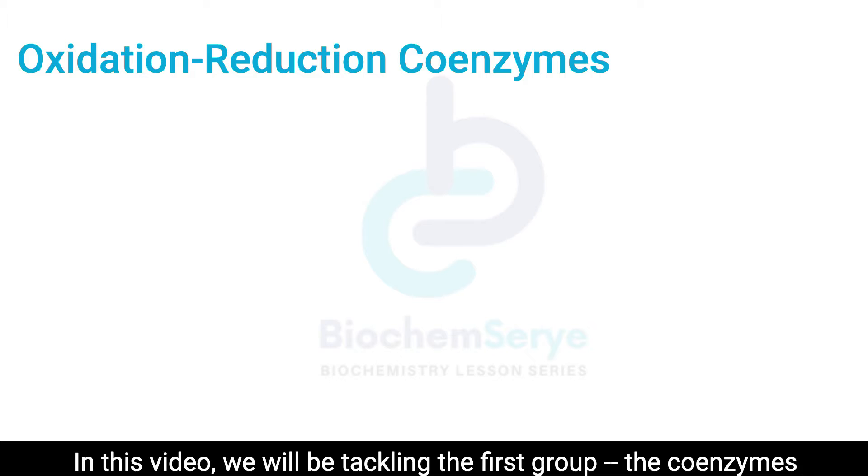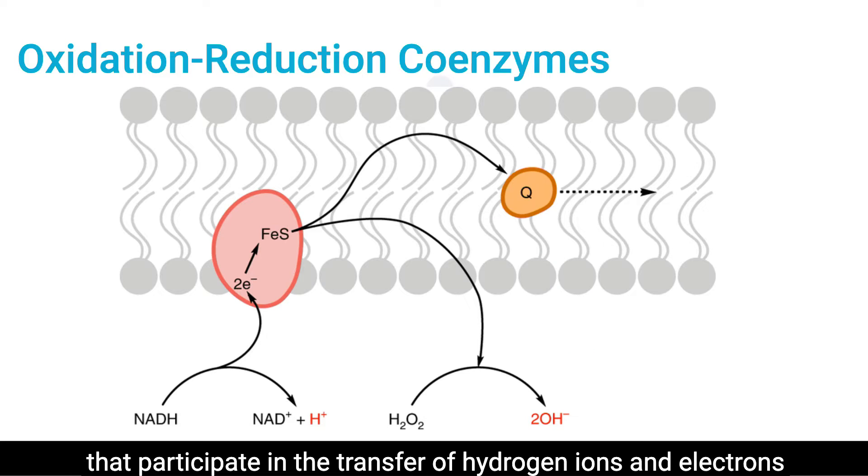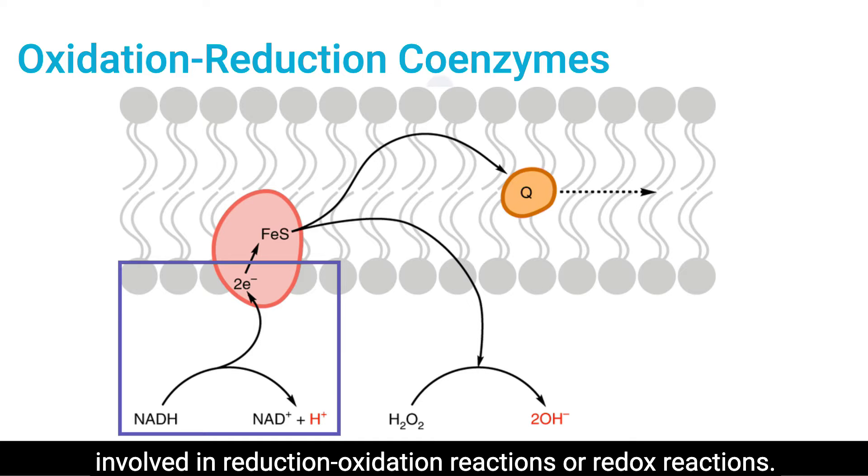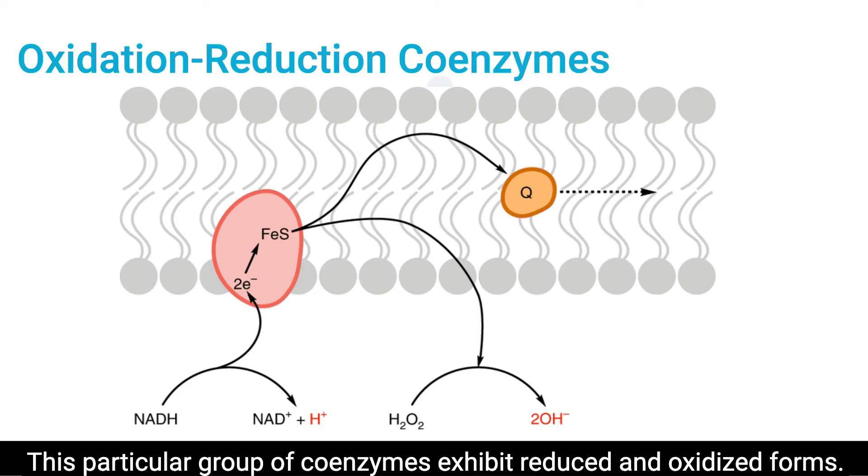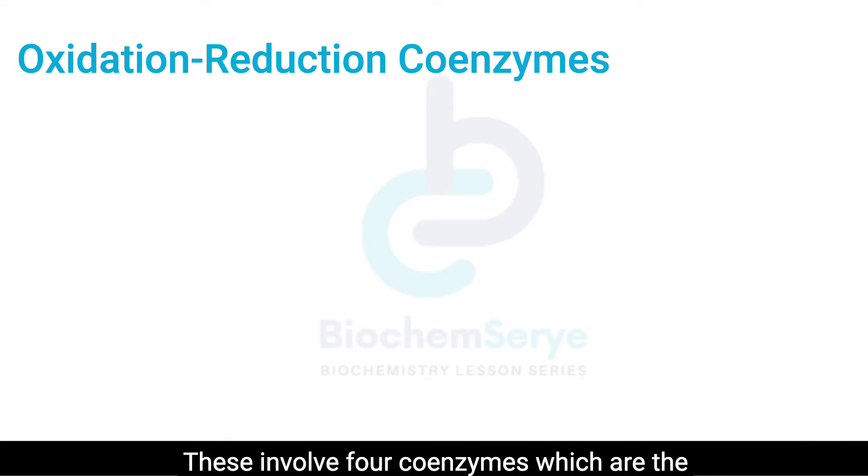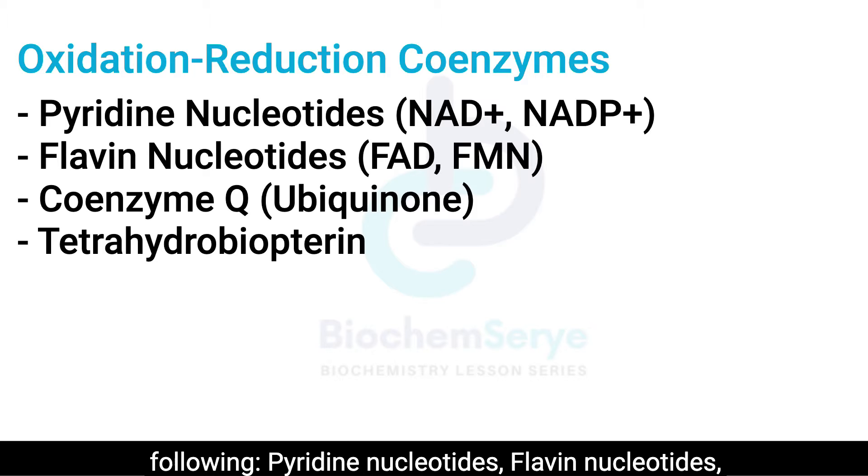In this video, we will be tackling the first group, the coenzymes that participate in the transfer of hydrogen ions and electrons involved in reduction-oxidation reactions or redox reactions. This particular group of coenzymes exhibit reduced and oxidized forms. These involve four coenzymes which are the following: pyridine nucleotides, flavin nucleotides, ubiquinone or coenzyme Q, and tetrahydrobiopterin.